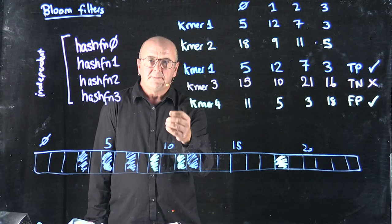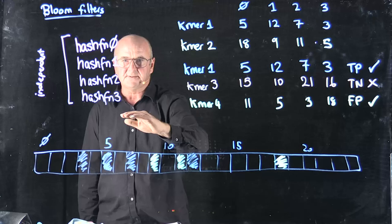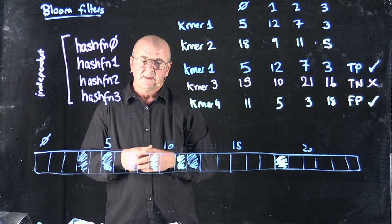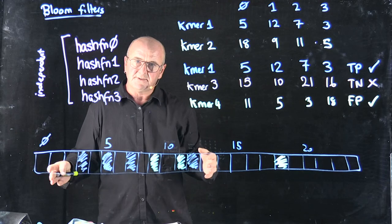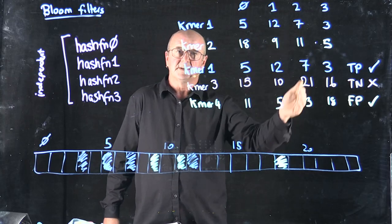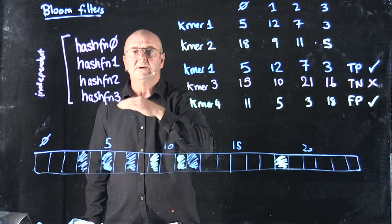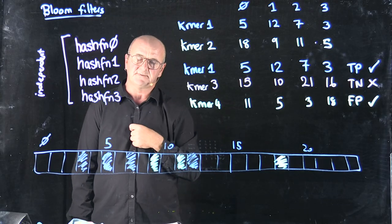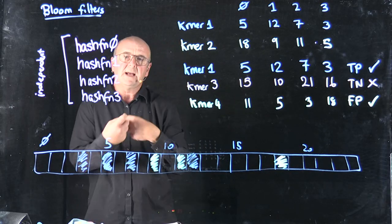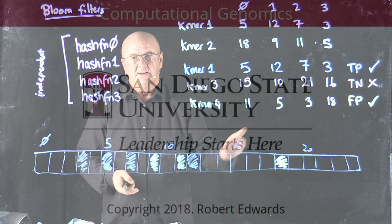The probability that you get the wrong answer is dependent on how many hash functions you have. But more importantly, it's dependent on the size of your array. If you've got a bigger array — more bins, more buckets to put things in — then you're going to have less collisions. You're going to have less opportunity for different KMAs to give you the same answer with different hash functions. It's also dependent a little bit on the interconnectedness between your hash functions. But the biggest factor is just the size of the array. You can actually choose the probability with which you're likely to get false positives from a bloom filter.